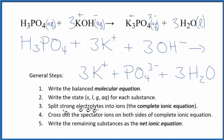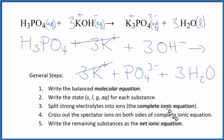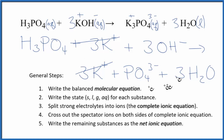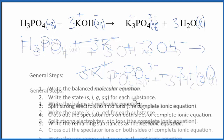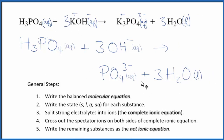Next, we can cross out spectator ions — they're on both sides of the complete ionic equation, so they haven't changed and we're not interested in those. In the reactants I have 3 potassium ions, and in the products, 3 — so let's cross those out. Everything else is unique, so this is our net ionic equation for H3PO4 plus KOH. This is the net ionic equation for phosphoric acid plus potassium hydroxide. We have the same number of each type of atom on both sides and the same amount of charge — 3 minus on this side and 3 minus on that side. So everything is conserved.